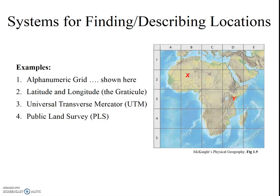Before we get too far in our study of geography, we need a system for finding and describing locations. There are several systems commonly used, and most rely on a simple grid concept. Here are four common systems, though we're really only going to address the first two in this video clip. The third is commonly used with GPS systems, and the fourth is commonly used when depicting areas — for instance, the public land survey system used on land deeds.